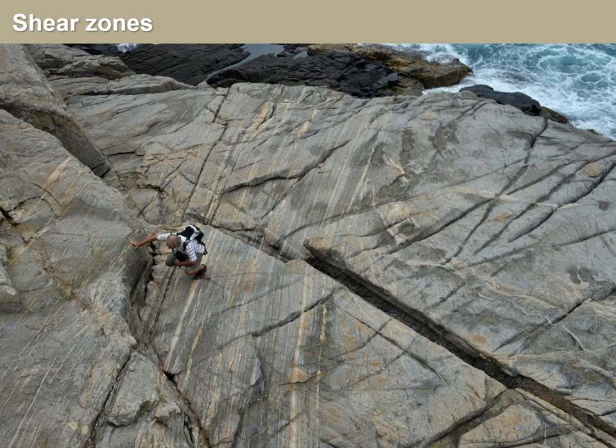The kinds of deformations in terms of coaxiality — it could be simple shear, it could be pure shear, a combination of the two, transpression — that's not part of the definition of the shear zone. That's more specific information about the shear zone that is important, but a shear zone is just a high strain zone. You can see that in this picture — this person standing on rocks that have a stronger fabric than the wall rocks. The red lines outline the shear zone in this case. This picture is from Rio de Janeiro in Brazil.